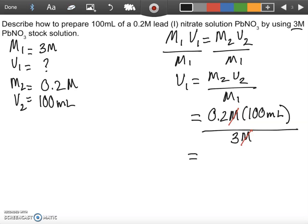Okay, let's go ahead and use our calculator to figure out how much of the 3 molar stock solution we need. 0.2 times 100, that's 20. We're going to divide that by 3.